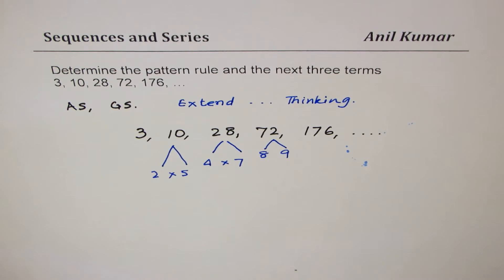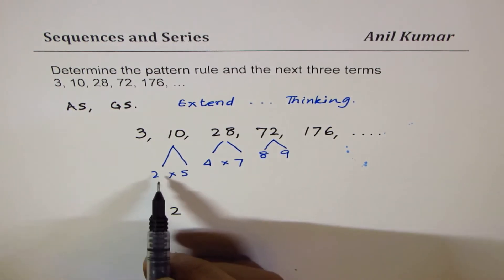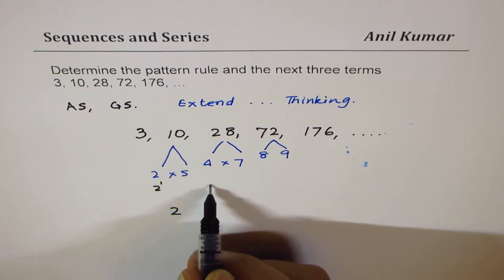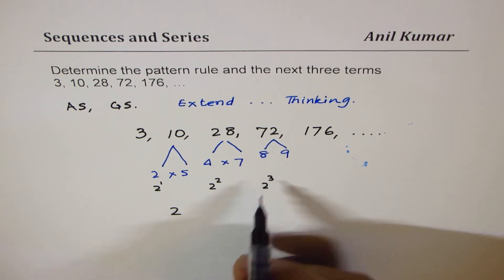Well, what we see that the first term here is 2, 4, 8. So it seems as if the first term is a power of 2. So this is power of 2 to the power of 1. Let me write here, 2 to the power of 1. Here we have 2 to the power of 2. Here we have 2 to the power of 3.